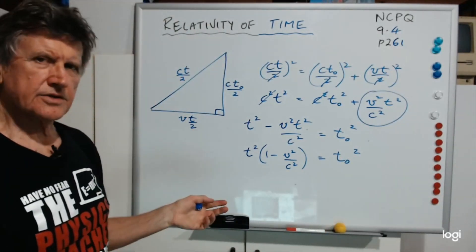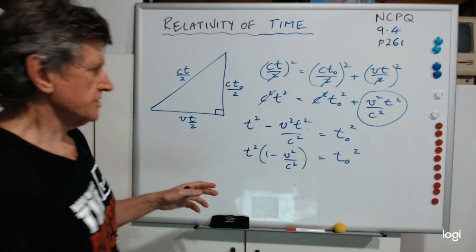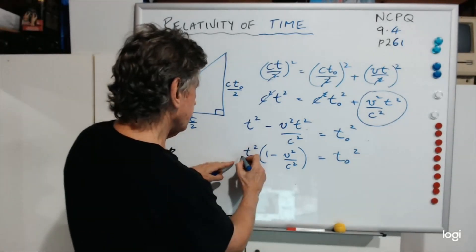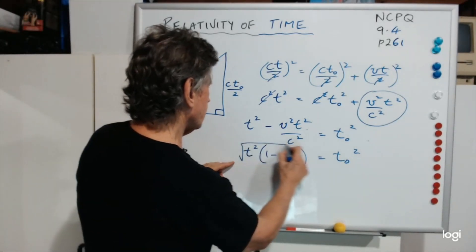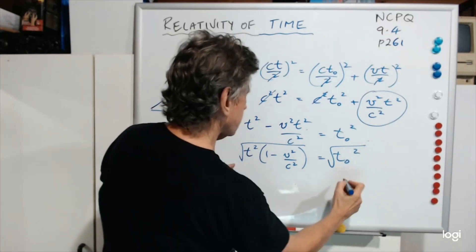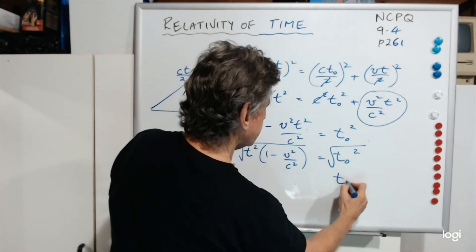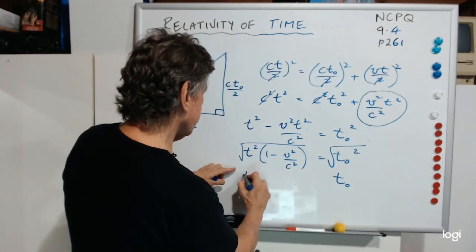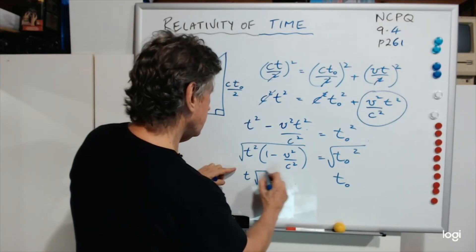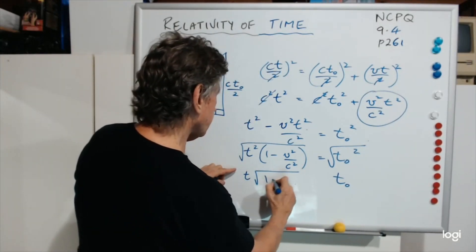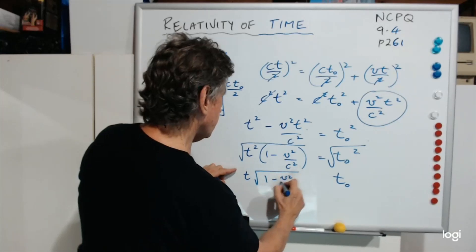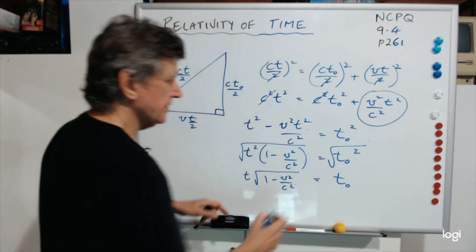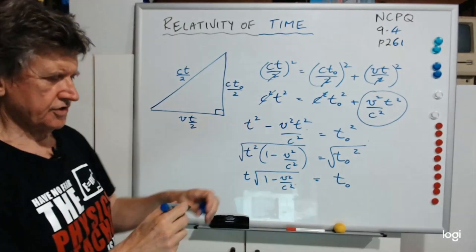Now I'm going to take the square roots of both sides. That gives me T0 = T√(1 - V²/C²). That's the relationship, derived from this.